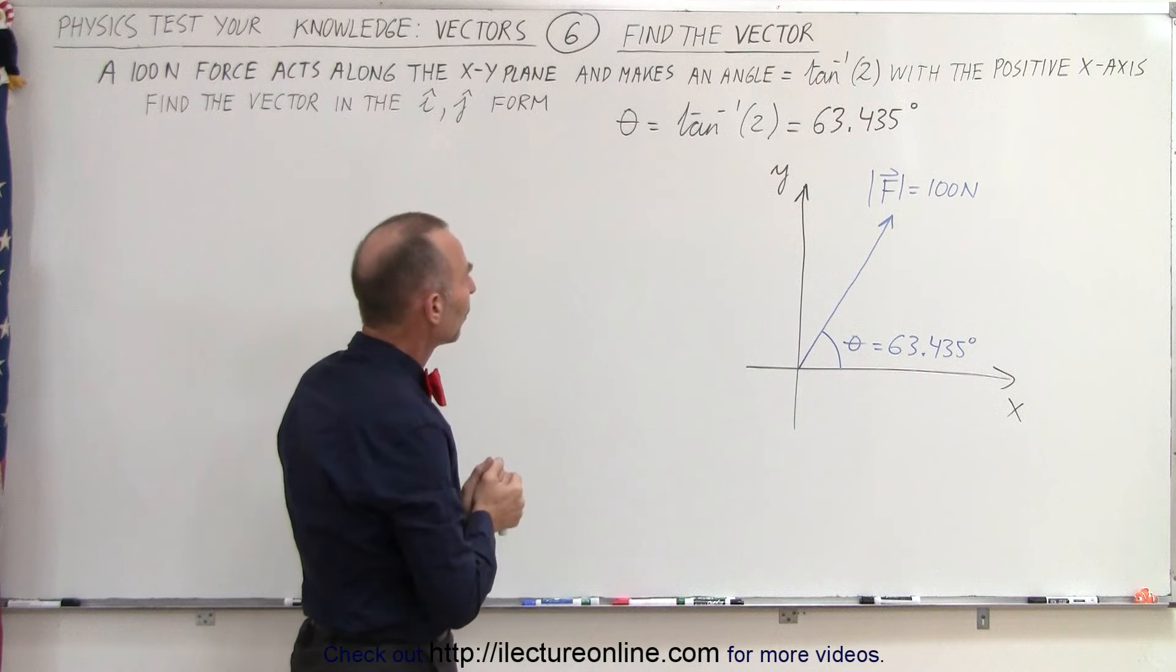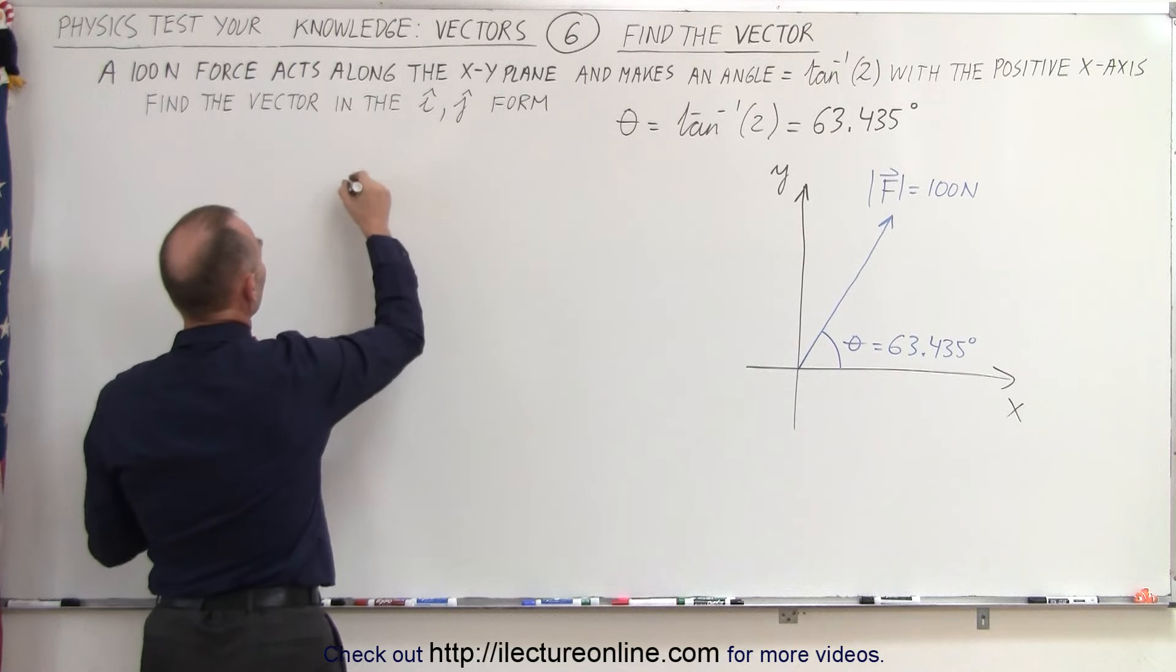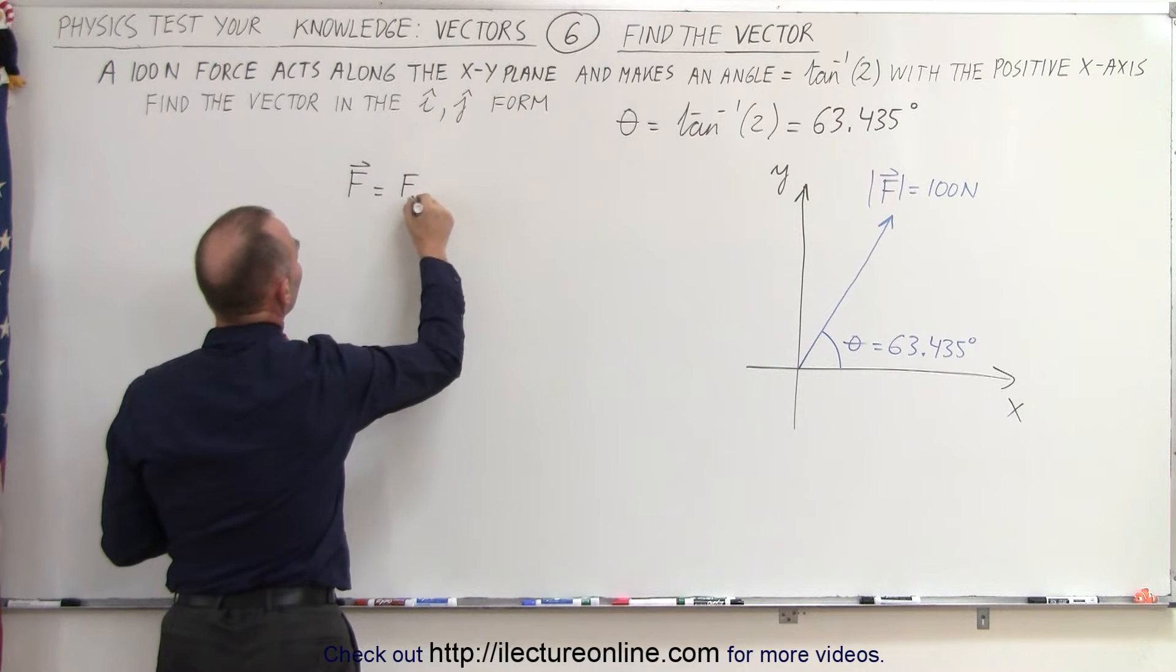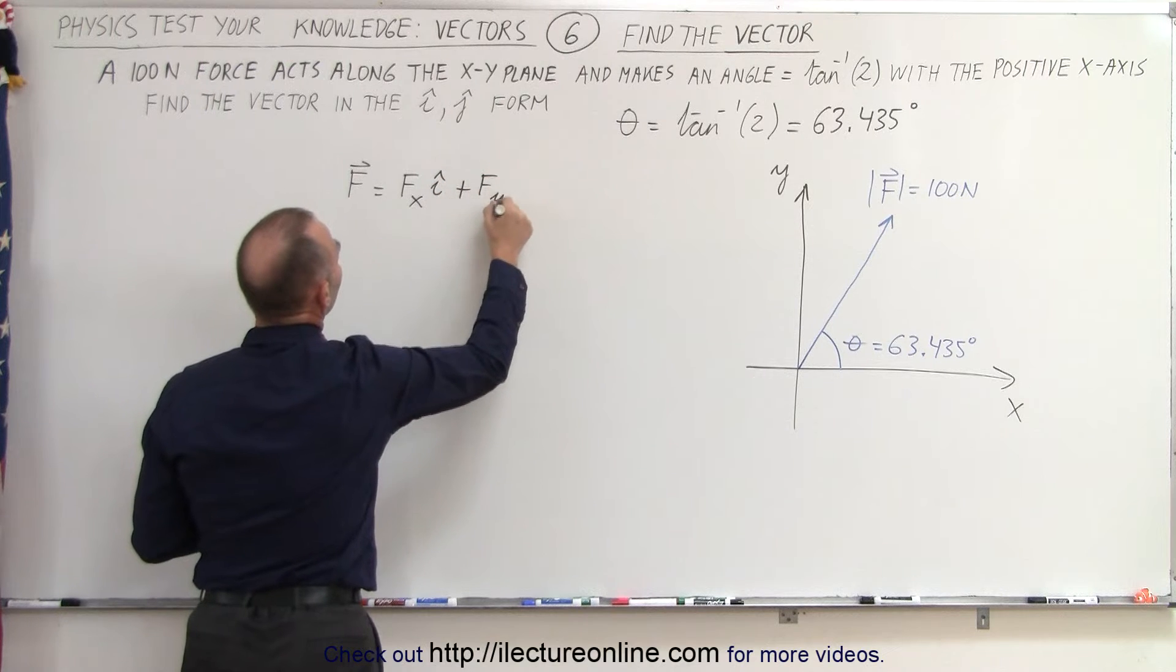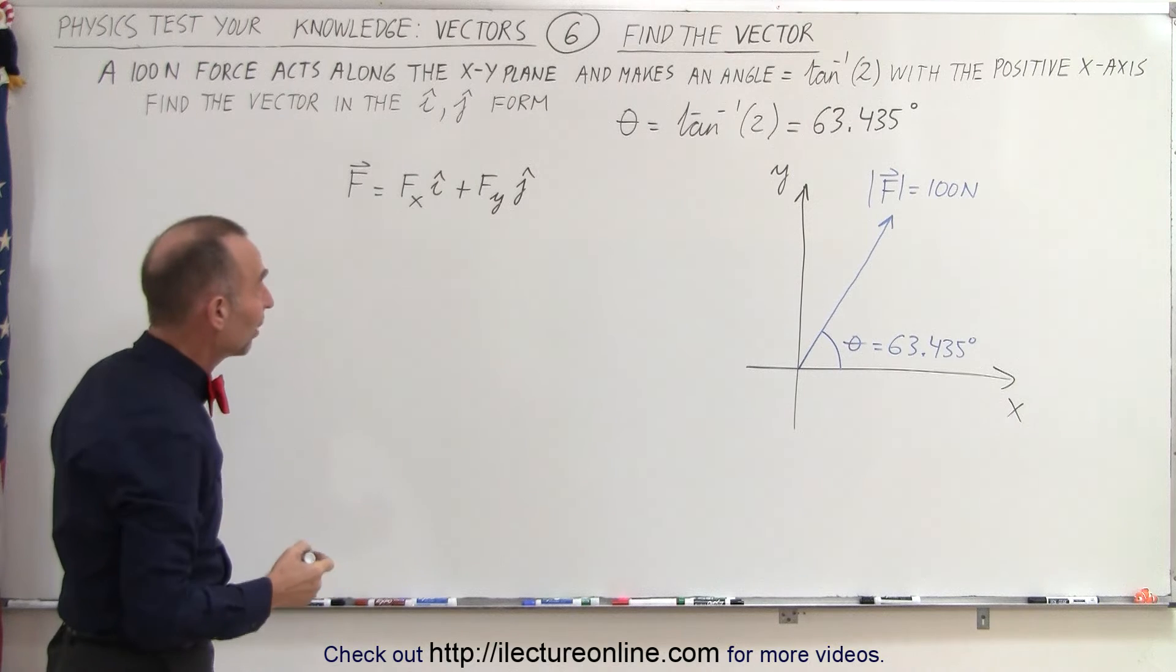What are we supposed to do now? We're supposed to find a vector in the format as follows. The vector F is equal to F sub X in the I direction plus F sub Y in the J direction. We're trying to find the X and Y components of that vector.